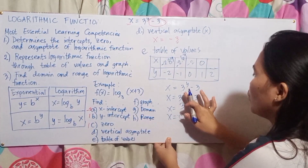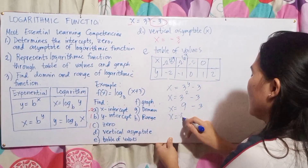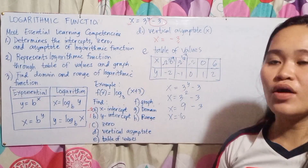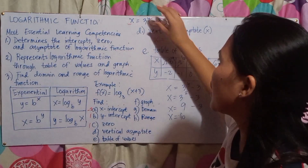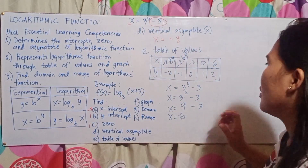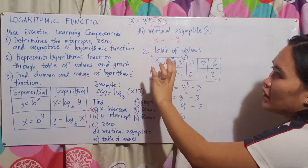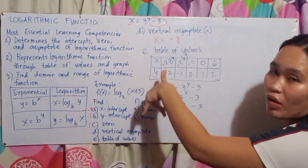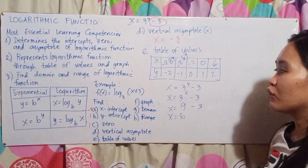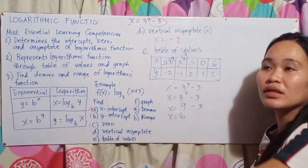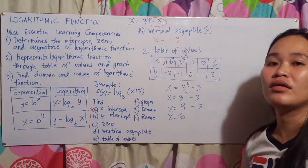Continuing the table: for y equals 1, x equals 0; for y equals 2, x equals 3 times 3 minus 3 equals 9 minus 3 equals 6. Note that this logarithm table is just the inverse of the exponential table from the previous lesson — the x and y values are simply swapped. So the table of values for the logarithm is the inverse of the table for the exponential.